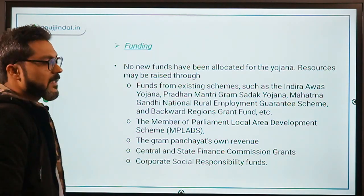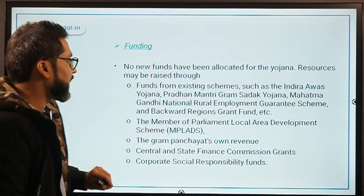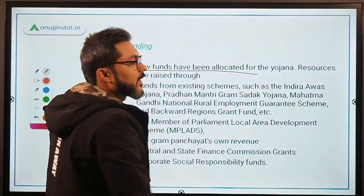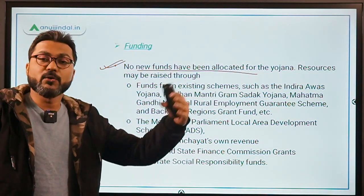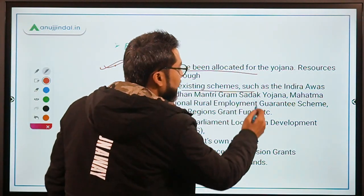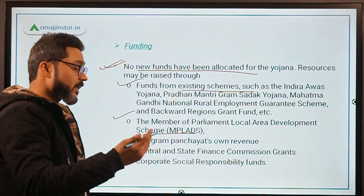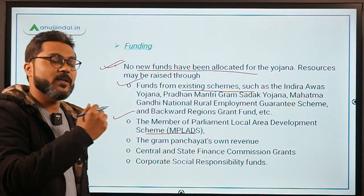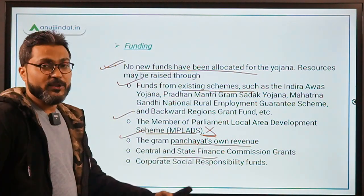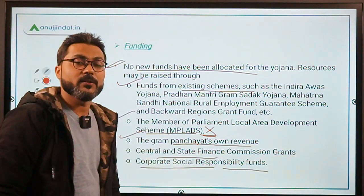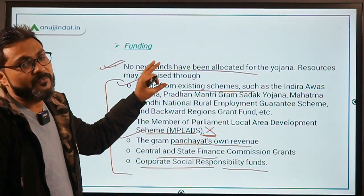Now let's talk about funding. Remember that there are no new funds allocated for this Yojana. The existing funds already given to various programs will be used. Sources include existing schemes like Indira Awaas Yojana, Pradhan Mantri Gram Sadak Yojana, and MGNREGA. Also MPLADS funds — though note that MPLADS has been suspended for two years. Additionally, Gram Panchayat's own revenue, Central and State Finance Commission grants, and Corporate Social Responsibility funds are sources. There is no new corpus specifically created for this Yojana.